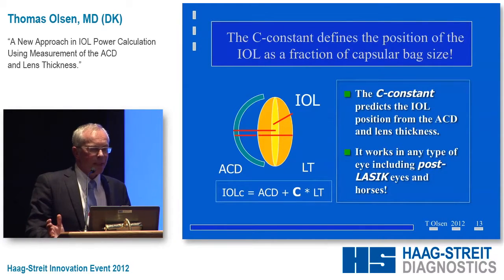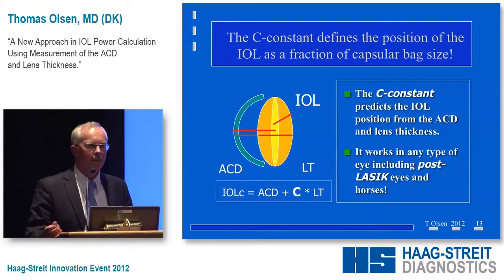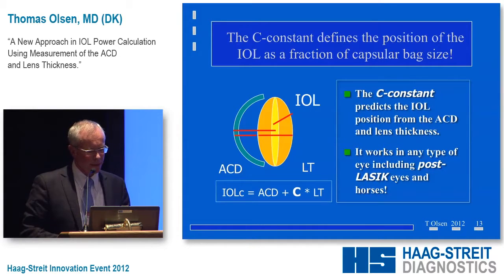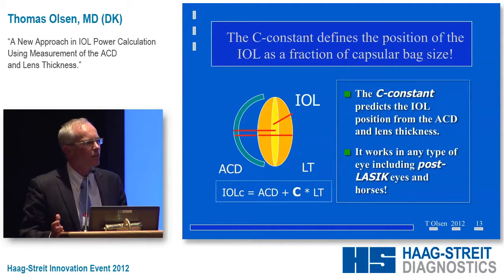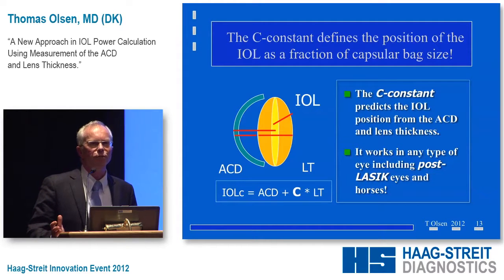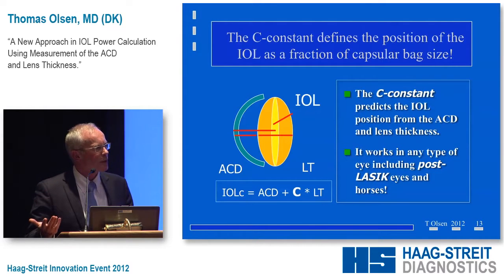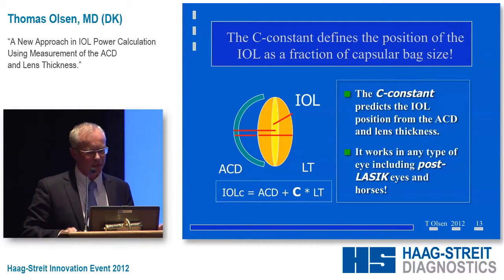We have come up with a concept which is really simple. The C constant describes the position of the implant in the eye as a variable from the anterior chamber depth and lens thickness. It's a fraction of the lens thickness. The C constant of the crystalline lens is 0.5, because 50% is exactly in the center. The same constant applies to different IOL types, and the normal fraction is about 0.4 to 0.5.